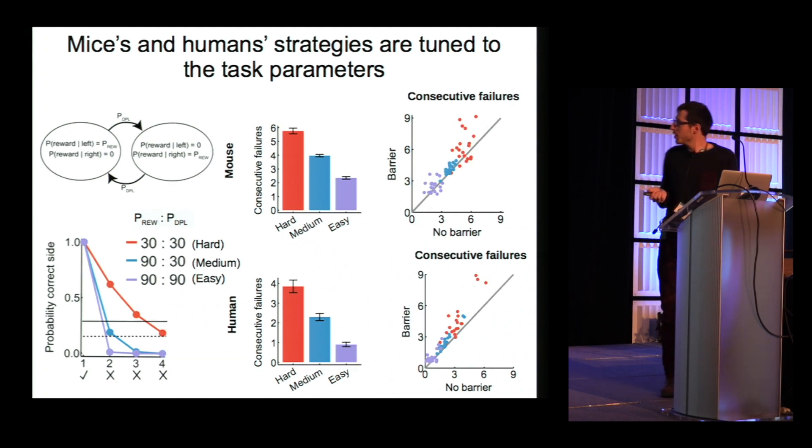Then, as a separate manipulation, we'd also played with the travel cost. To increase the travel cost in the mice, we simply added a barrier between the two nose-pokes, and in the humans, we slowed down the player velocity in the video game. And that should correspond normatively to a decrease in the indifference point between staying and leaving, so you should be less willing to leave, which translates in more consecutive failures before leaving, as you can see both in mice and in humans from these points above the diagonal, especially in the hardest protocol.